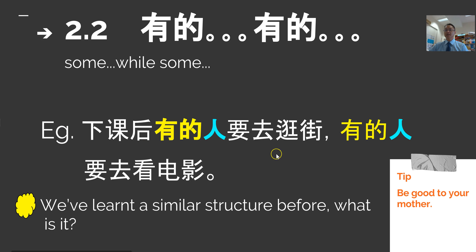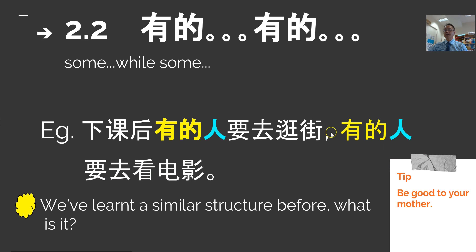下课后有的人要去逛街 — After class, some people want to go and have a walk around. 有的人要去看电影 — while others want to go and watch a movie.